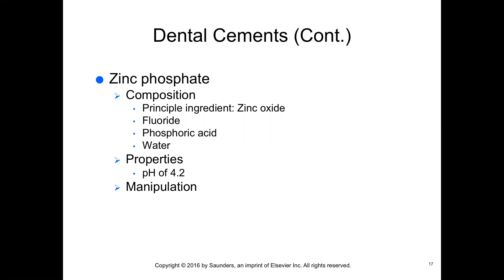Zinc phosphate, which sets through an acid-base reaction, is the oldest of the cements — having been used for longer than 100 years. It is recognized for problems with hypersensitivity and is not widely used today. It is available as a powder-liquid system and can only be mixed on a cool glass slab. The powder is principally zinc oxide and the liquid is phosphoric acid in water. When mixed, the chemical reaction causes an exothermic reaction controlled by time and temperature. Incremental incorporation of powder into the liquid allows controlled dissipation of heat, as does mixing over a large area of a cooled glass slab. The initial acidity of 4.2 becomes neutral within 24 to 48 hours, but the initially low acidity can cause pulp irritation. Zinc phosphate is also highly soluble.